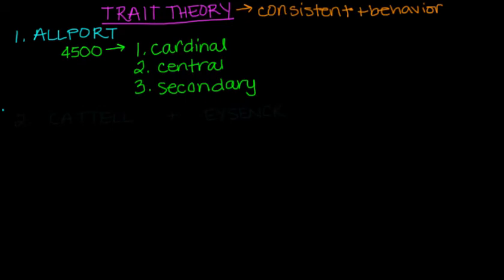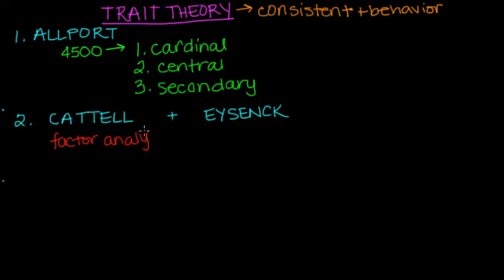So moving forward with the trait theory, we have two other theorists that tried to also describe the trait theory. And the first one was Raymond Cattell. So Raymond Cattell used a statistical method called factor analysis. So by using factor analysis, he was able to find out that there were 16 pairs of source traits. So 16 pairs of source traits that we all possess and that represent the basic dimensions of personality. So he actually turned this into a personality test which he called the 16 personality factor questionnaire, or 16PF for short.